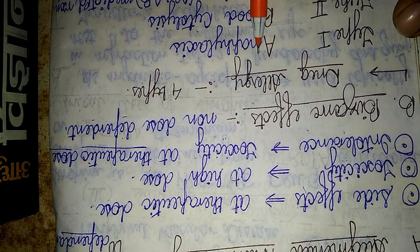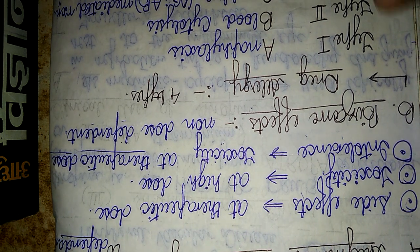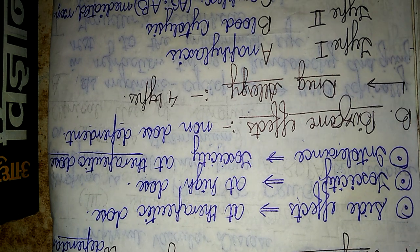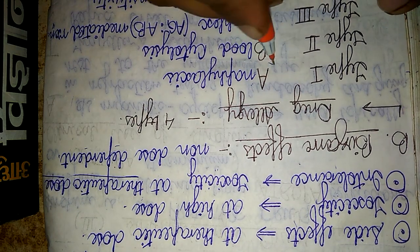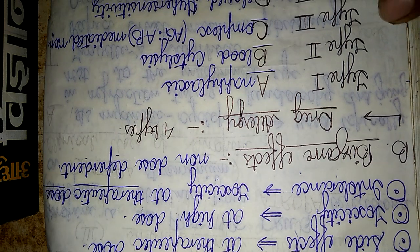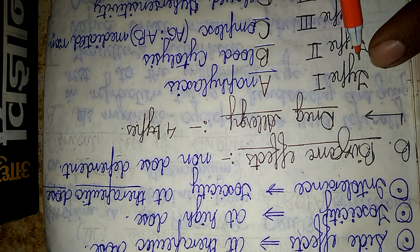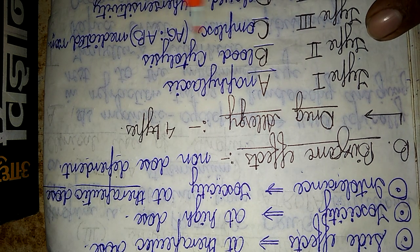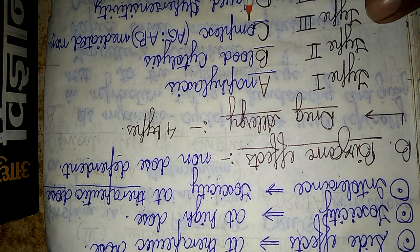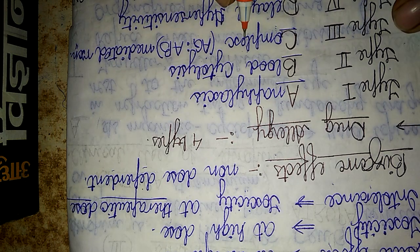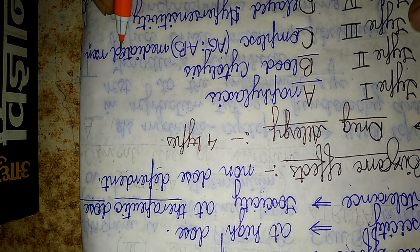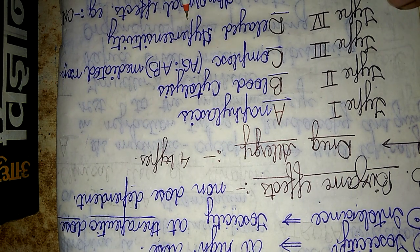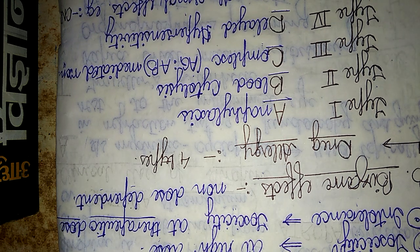The four types of drug allergies can be remembered alphabetically as A, B, C, and D. Type 1 is anaphylaxis. Type 2 is blood cytolysis. Type 3 is immune complex mediated — that is, an antigen-antibody mediated reaction. Type 4 is the delayed hypersensitivity reaction. These are the bizarre effects seen during an adverse drug reaction.